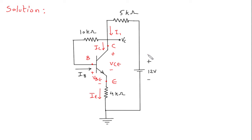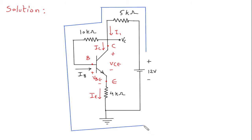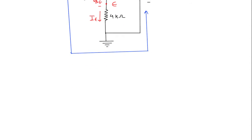Now let's identify the outer loop. We will apply KVL to the outer loop.